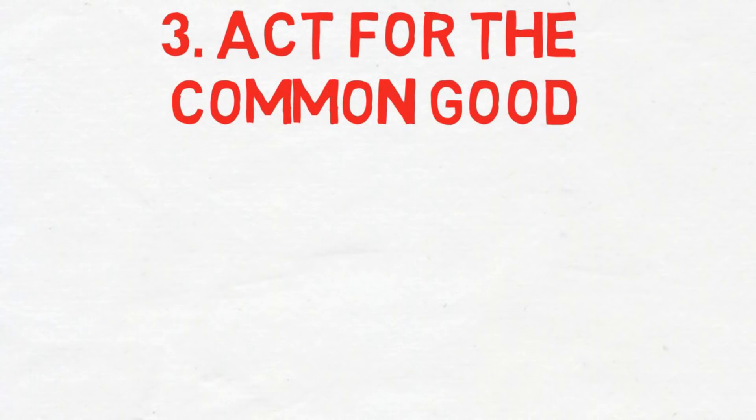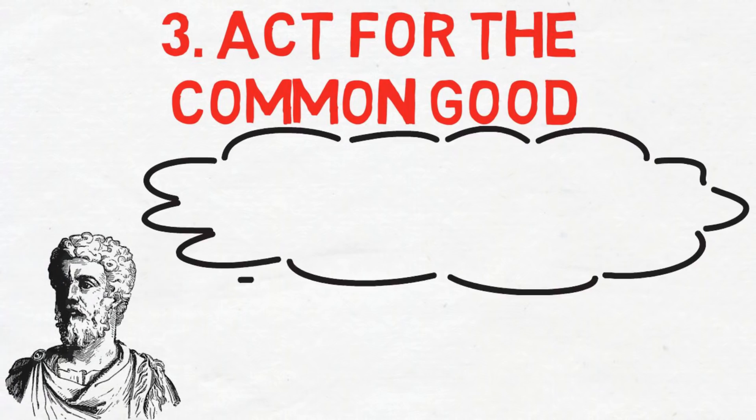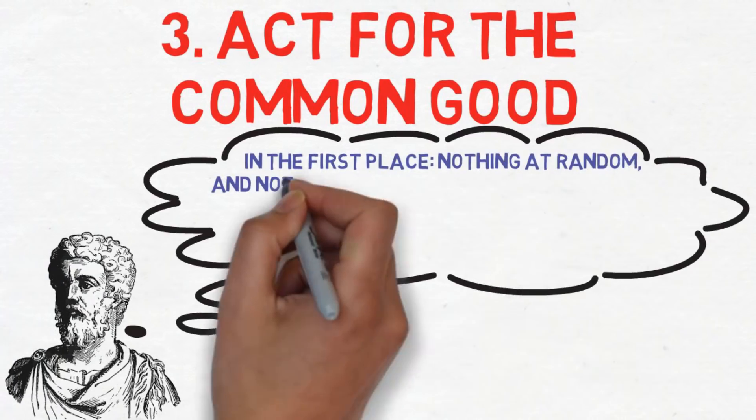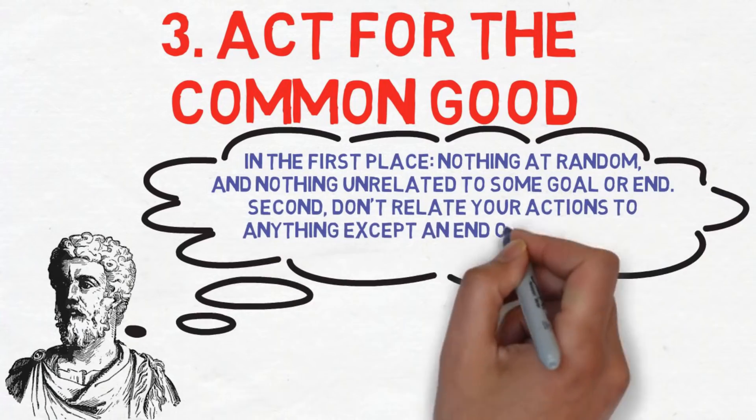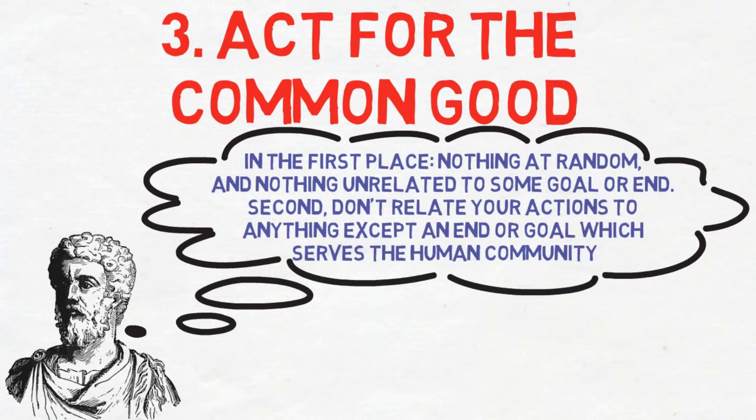Rule 3: Act for the common good. In Book 12 of his Meditations, we learn from Marcus Aurelius that, in the first place, nothing at random and nothing unrelated to some goal or end. Second, don't relate your actions to anything except an end goal which serves the human community.